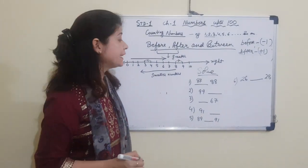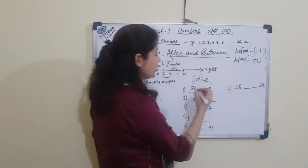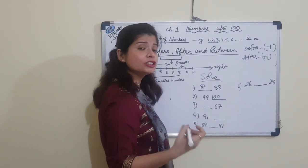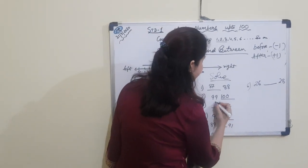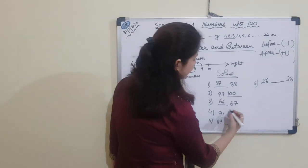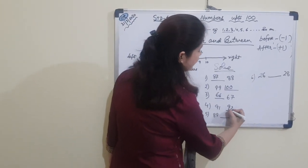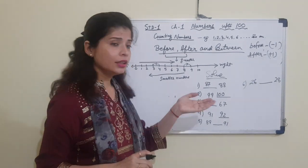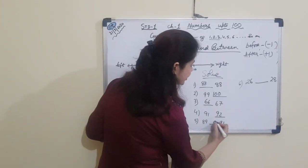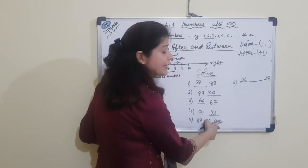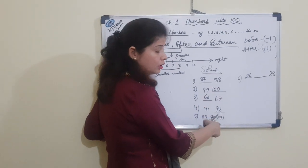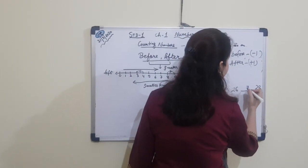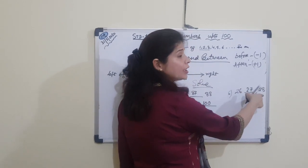After 99: 99 plus 1 — 9 plus 1 is 0, carry 1 over, giving 100. Before 67: 67 minus 1 — 7 minus 1 is 6, and 6 stays, giving 66. For 1 plus 1 is 2, giving 92. For the between question: what comes after 89? 9 plus 1 is 0, carry 1, giving 90. And 90 is the number that comes before 91. After 26: 6 plus 1 is 7, and 2 stays — 27, which comes before 28.